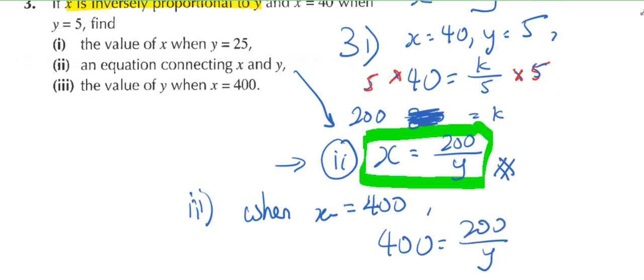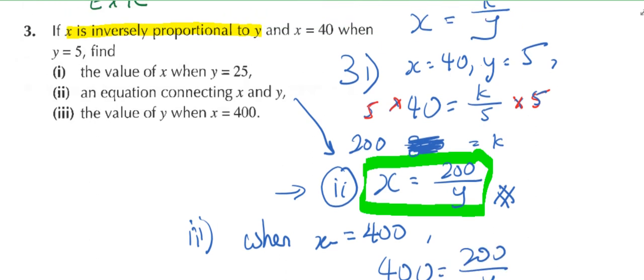How do I get 200? Look at this step. Do you see? K over 5 equals 40. How do I isolate K? I need to remove the 5. How do I remove the 5? Multiply by 5, so multiply both sides by 5.